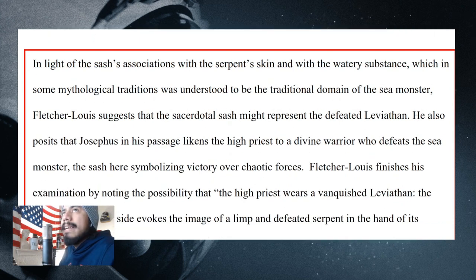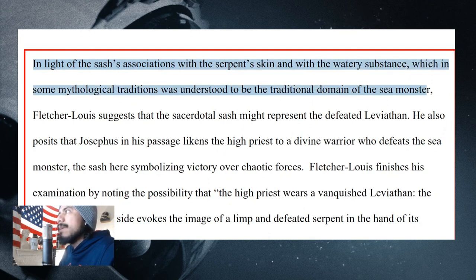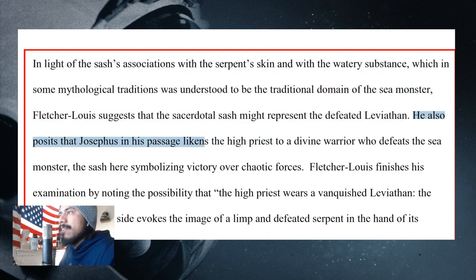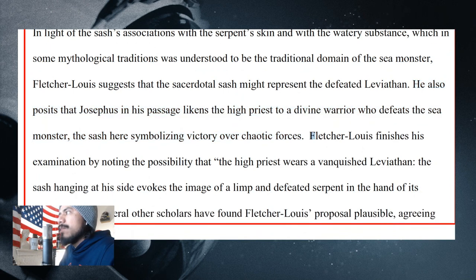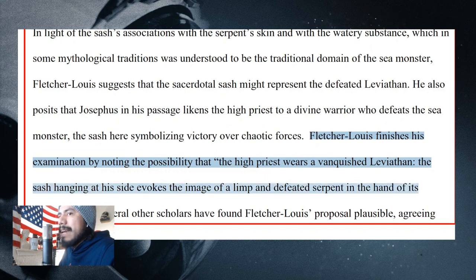In light of the sash's associations with the serpent's skin and with the watery substance — the sea, the ocean — which in some mythological traditions was understood to be the domain of the sea monster, Fletcher Lewis suggests that the sacerdotal sash might represent the defeated Leviathan. He also posits that Josephus likens the high priest to a divine warrior who defeats the sea monster, with the sash symbolizing victory over chaotic forces. Fletcher Lewis finishes by noting the possibility that the high priest wears a vanquished Leviathan, the sash hanging at his side evoking the image of a limp and defeated serpent in the hand of its conqueror.